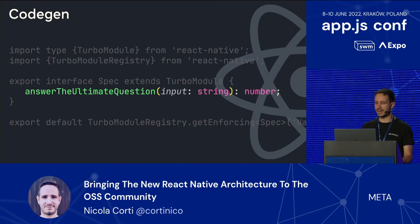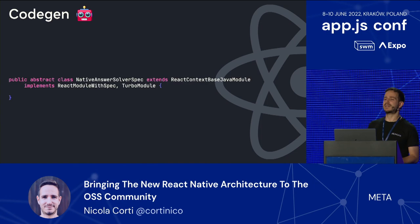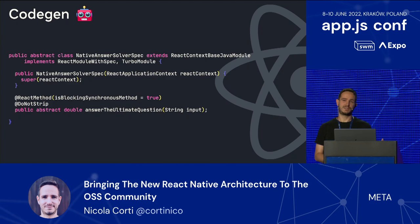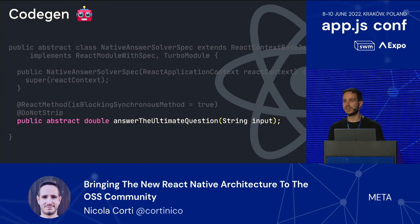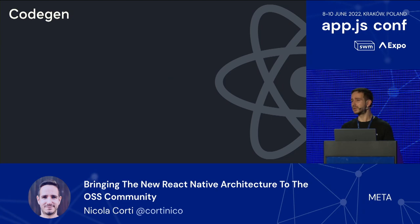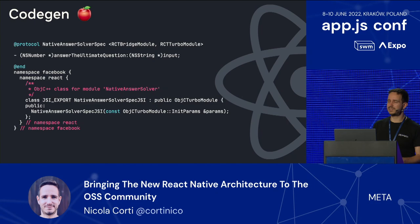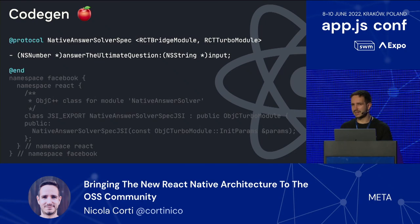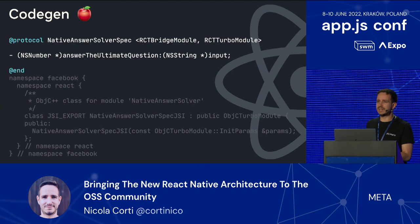What the Codegen does is collect this information and create specific code for every platform. On Android, you will have an abstract class with constructor and everything needed, and specifically one abstract method that you, the developer, need to implement — in this case, 'answer the ultimate question' with a Java String input and a double output. On iOS, we generate equivalent code — an Objective-C protocol that you need to implement. This component is optional. We generate code because internally we realized developers were copying this code over and over, so we felt there was an opportunity for optimizing. The whole new architecture setup works also without the Codegen.